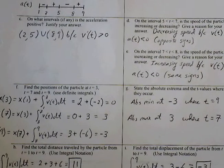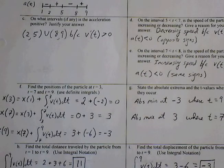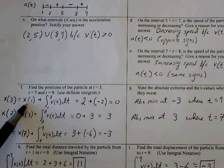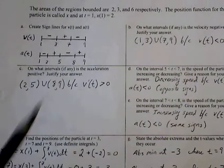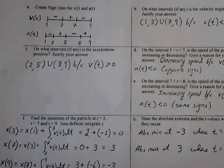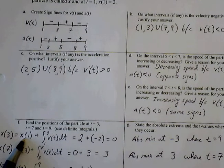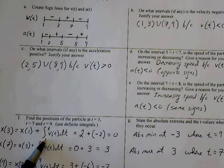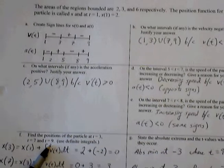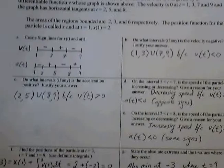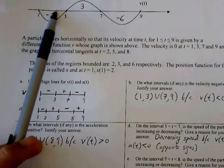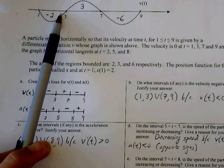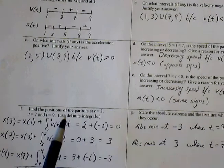Part F, find the position of the particle at t equals 3, 7, and 9. If I want to find x of 3, I need to know where my starting position is. The problem tells us our starting position x of 1 equals 2. So if I want to know where my location is after t equals 3, then I say x of 1 plus the definite integral of v of t dt from 1 to 3. From 1 to 3 on my graph, I will have traveled negative 2, so I can think of it as going 2 units in the opposite direction, in the negative direction. So 2 plus negative 2 will be 0.